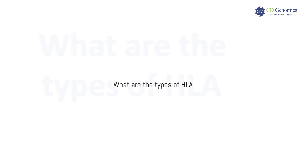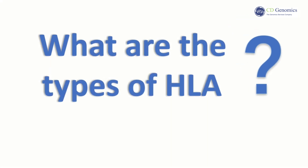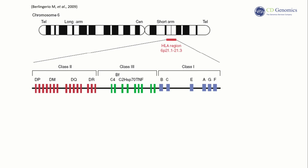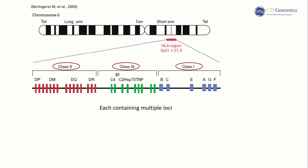So what types of HLA are there? Based on factors such as the structure, function, and cellular distribution of gene products, HLA molecules can be classified into three major classes: HLA Class I, II, and III genes, each containing multiple loci.